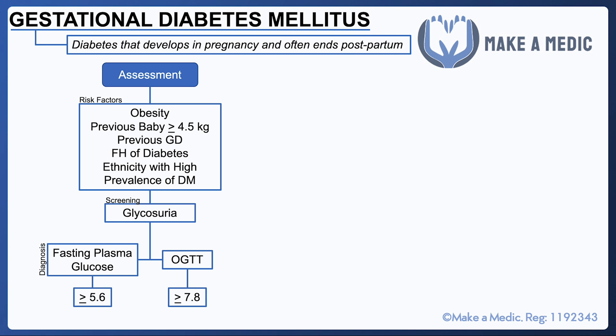A fasting plasma glucose of 5.6 or more is suggestive of GDM, and an oral glucose tolerance test result at 2 hours of 7.8 or more is also diagnostic of GDM.